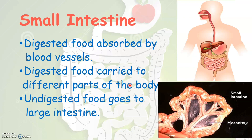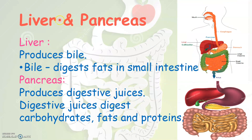What happens to the undigested food? Undigested food goes into the large intestine. Now let us look at the liver and pancreas. The liver, marked in red in the picture, is an organ that produces bile — a juice which helps in the digestion of fats in the small intestine. The pancreas, shown in green behind the stomach, produces digestive juices that help in the digestion of carbohydrates, fats, and proteins.